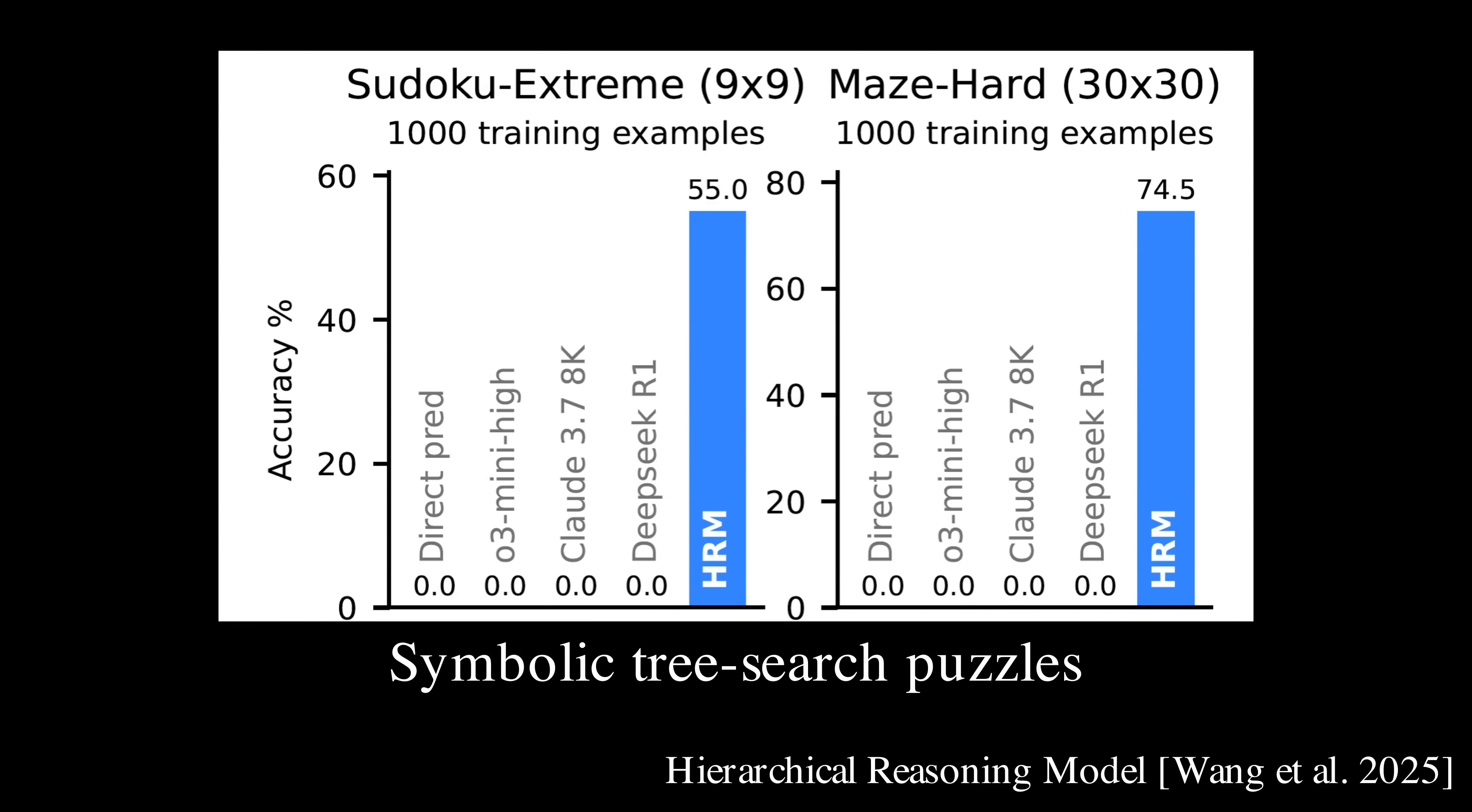Its results on puzzles like Sudoku and Maze are particularly impressive. Other models struggle to solve these complex symbolic tree-search problems, often failing entirely.